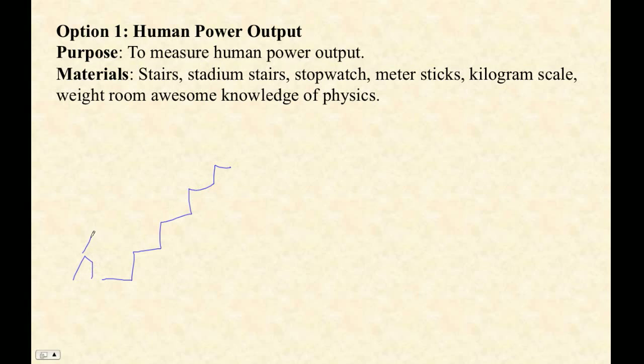People would run up these stairs. There's a person running. The idea was that the power was the potential energy they gained divided by the time. So we would all measure what this change in height was using cleverness, and then we would time them and we'd do several trials of that. Then people could take their pounds and divide by 2.2 or something like that and get kilograms, and we could figure out your human power output.